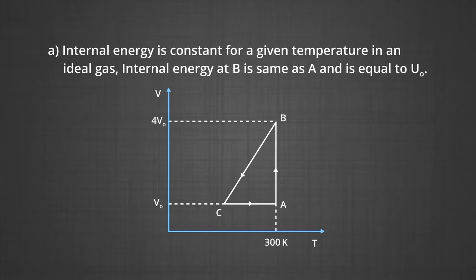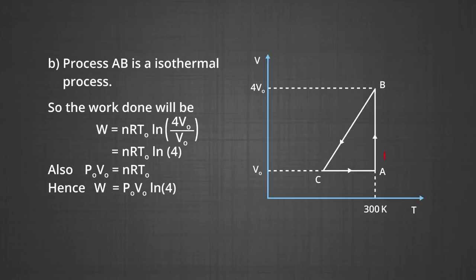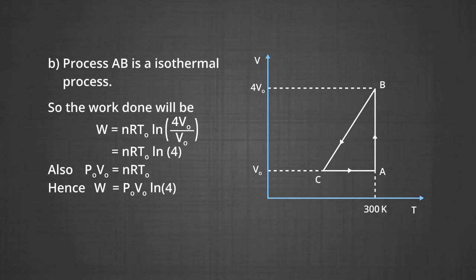Since internal energy is constant for a given temperature in an ideal gas, the internal energy at B is the same as at A, equal to U₀. Process A→B is an isothermal process, so the work done is W = nRT₀ ln(4V₀/V₀) = nRT₀ ln4. By the ideal gas equation, P₀V₀ = nRT₀, hence the work done equals P₀V₀ ln4.